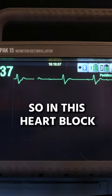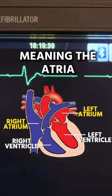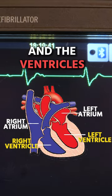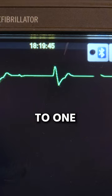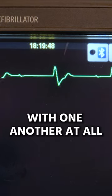So in this heart block, the P waves, meaning the atria, and the ventricles, QRS complex, they are not speaking to one another. They're not in coordination with one another at all.